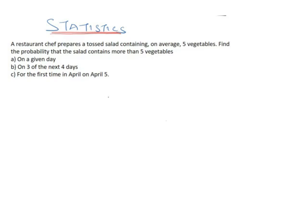Find the probability that the salad contains more than five vegetables on a given day. Solution: This is a Poisson distribution probability. For Poisson probability, let's find the parameter which is equal to μ, which is λt, which is 5 times one day, which equals 5.